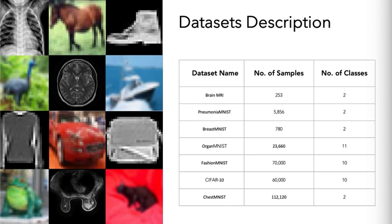Some of them are medical image datasets and others are not medical image datasets. The number of samples for all the datasets ranges from 253 to 112,120 samples, and the number of classes ranges from 2 to 11 classes.